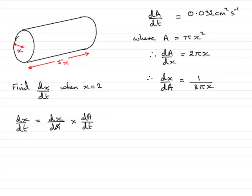So I've got the component parts now for dx by dt. So dx by dA is going to be 1 over 2 pi x, so you have 1 over 2 pi x. And that's being multiplied by dA by dt, which is 0.032.